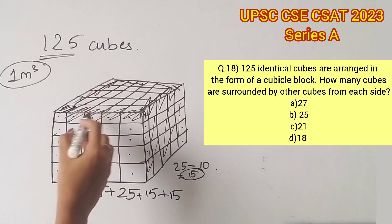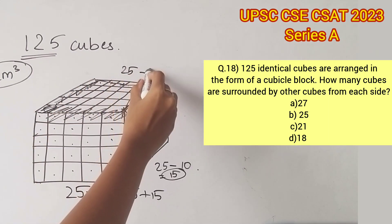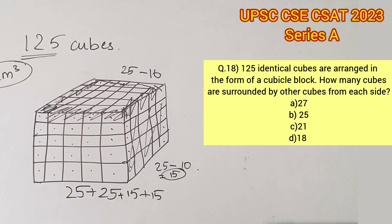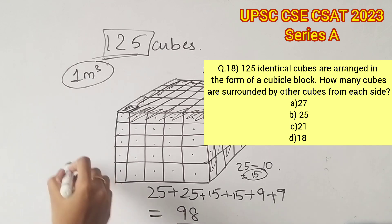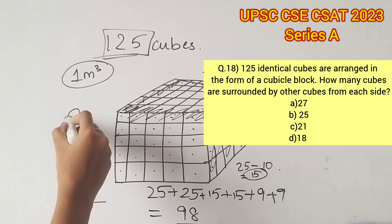This holds true for the opposite side as well, which is the bottom portion. Therefore, adding 25 plus 25 plus 15 plus 15 plus 9 plus 9 would give us 98. So 125 minus 98 would give us 27. Therefore, option A is the right answer.